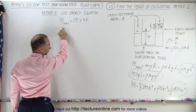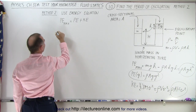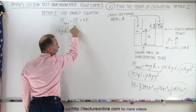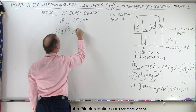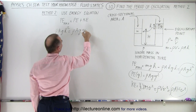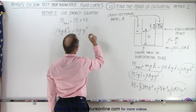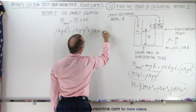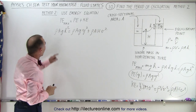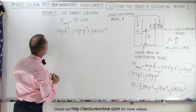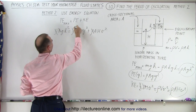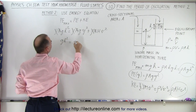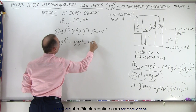Now let's plug those three components together. Potential energy max — density times cross-sectional area times G times H squared — is equal to the potential energy, density times area times G times Y squared, plus kinetic energy, density times cross-sectional area times H times V squared. Notice all components have density and cross-sectional area, which cancel out. So we're left with GH² equals GY² plus HV².